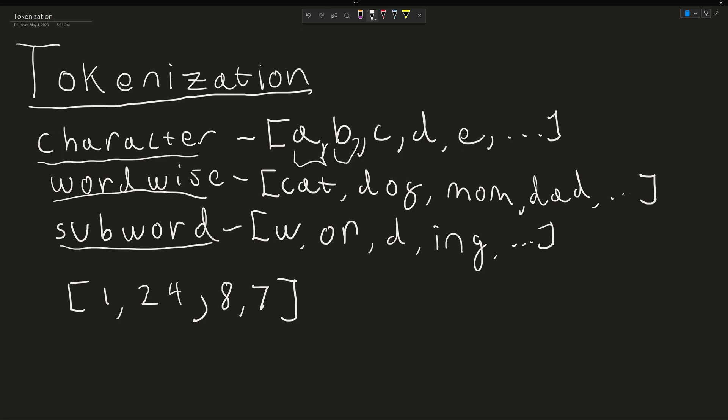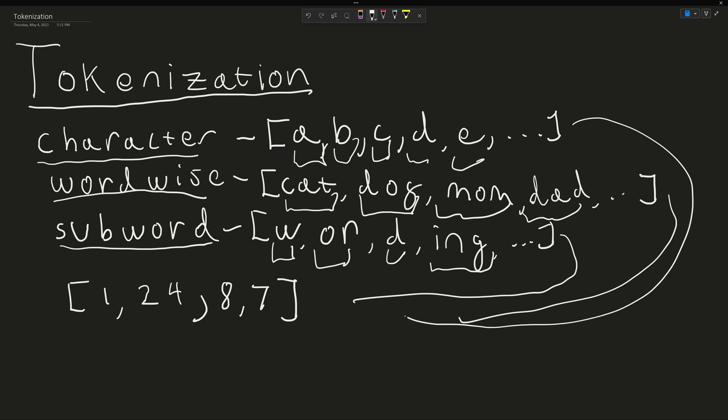With character tokenization, each individual character is treated as a token. In wordwise tokenization, each individual word is treated as a token. In subword tokenization, we want each individual word part to be treated as a token. At the end of this, each of these variants are mapped to numeric representations that the computer can understand.